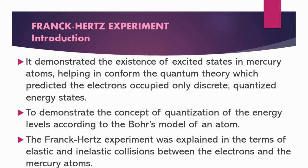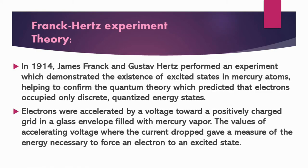Introduction of the Frank-Hertz Experiment: It demonstrated the existence of excited states in mercury atoms, helping to confirm quantum theory, which predicted that electrons occupy only discrete quantized energy states. It is the first experimental verification of the existence of discrete energy states in atoms, performed in early 1914 by German-born physicists James Frank and Gustav Hertz. Frank and Hertz designed a vacuum tube for studying energetic electrons flying through a thin vapor of mercury atoms. When an electron collides with a mercury atom, it can lose only a specific quantity — 4.9 electron volts — of its kinetic energy before flying away.